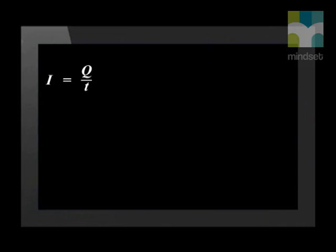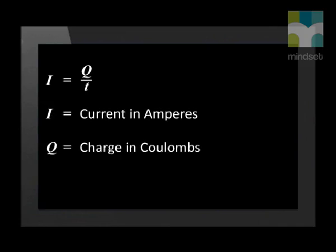So if the ammeter reads one ampere, that means that the current at that point in the circuit is equal to one ampere. Charge is measured in Coulombs, so therefore one ampere is equal to one Coulomb per second. We can represent this in an equation where I equals Q divided by T. I is current in amperes, Q is charge measured in Coulombs, and T is time measured in seconds.